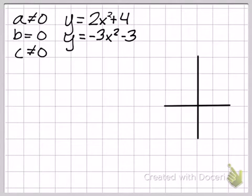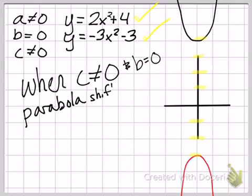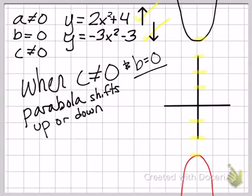Likewise, it could be a negative a value as well. But in any case, because of the positive four, that shifts the parabola up four places. So as you can see, it has now moved up one, two, three, four units. And that is because of the positive four. And then also, because of the negative three, the red parabola, which is also upside down because that is a negative sign, it has shifted down one, two, three units because of the negative three. So basically, when the value of c is not zero, but b is zero, the parabola just shifts up and down. That's it. It doesn't go side to side. That's going to happen if the value of b is not zero. But because it is zero, it's only going to shift up or down.